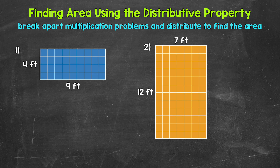Remember, for the area of a rectangle, we can multiply side lengths. So we can do 4 feet times 9 feet, or 9 feet times 4 feet. Let's set this up as 4 times 9. But let's say we don't know what 4 times 9 is — that's awesome if you do, but stick with me through this basic example and it will help us with more difficult problems.